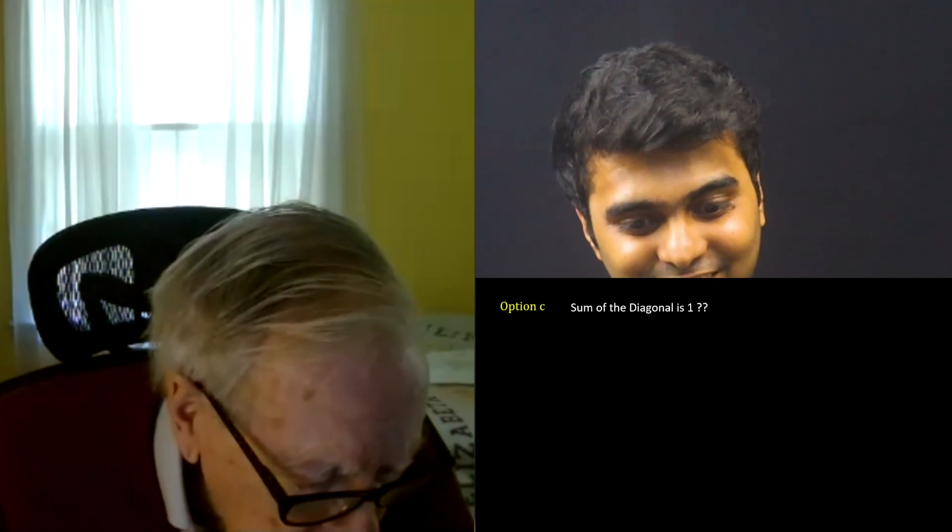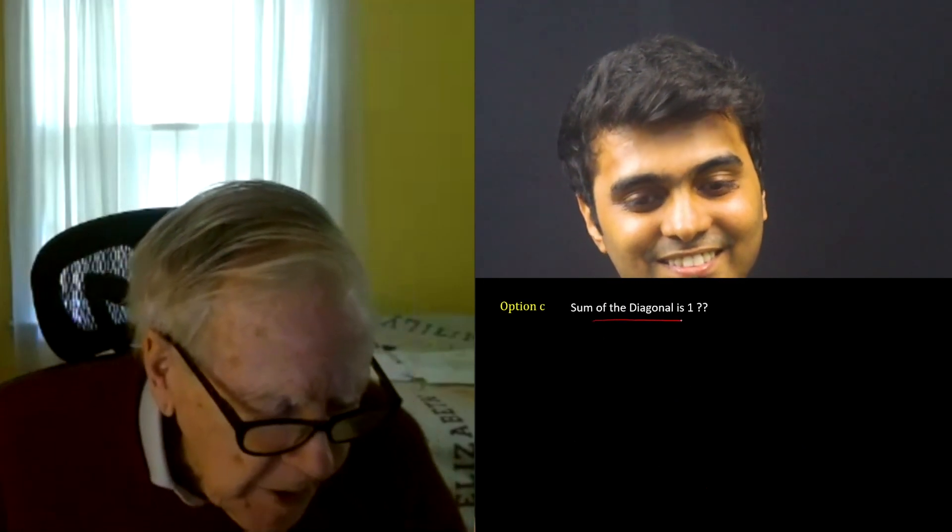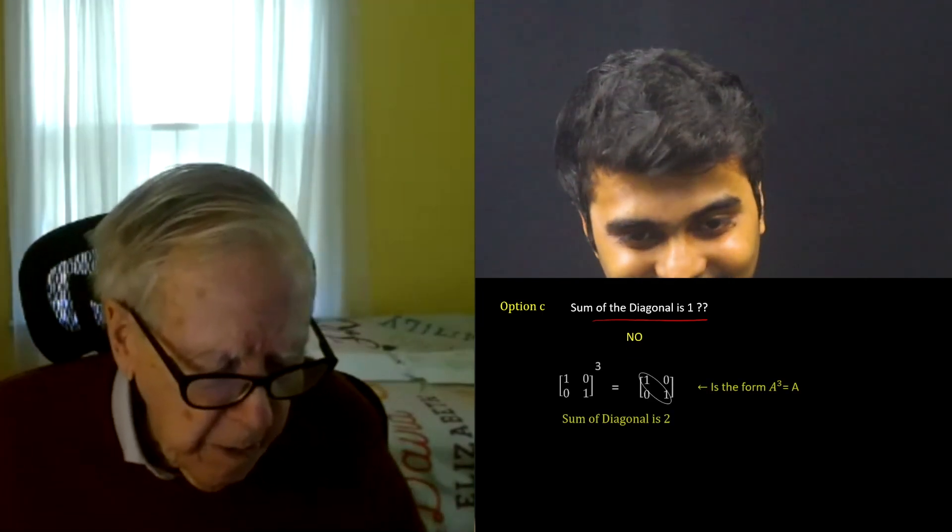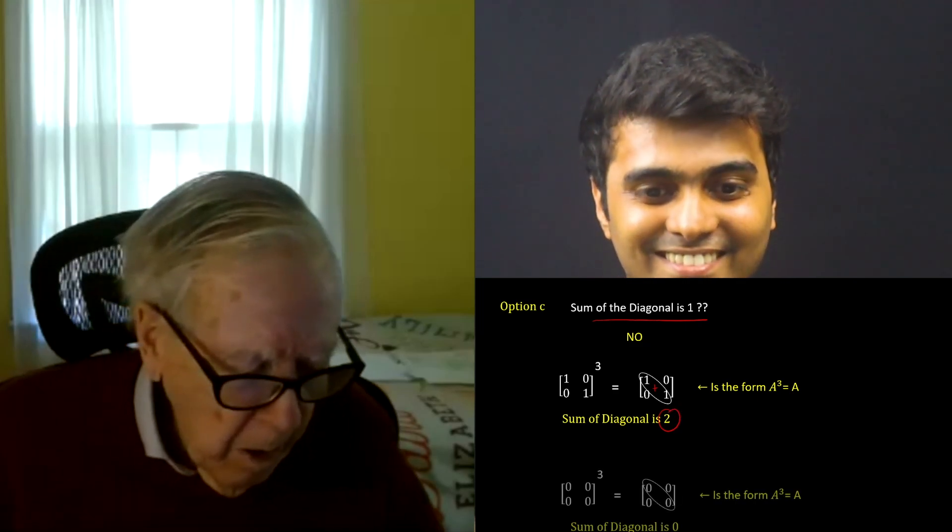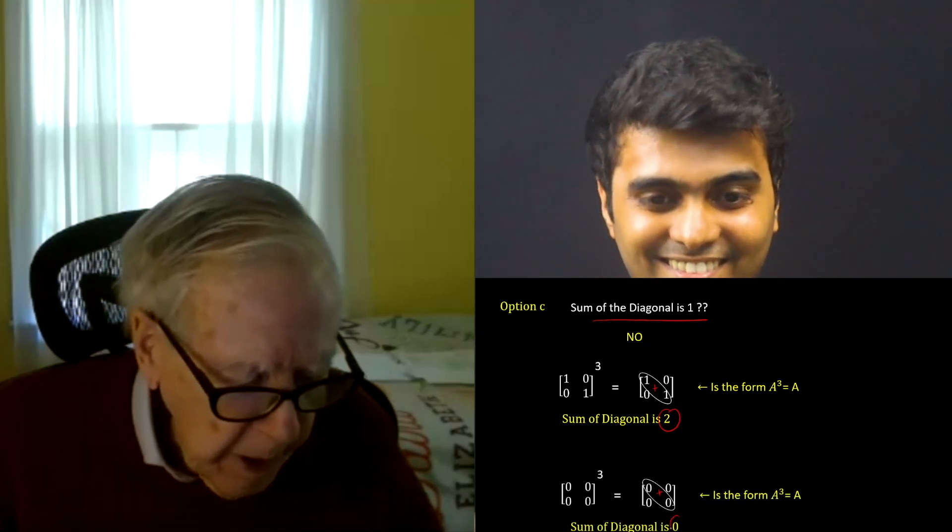So the sum of the diagonal elements of A is one? No, certainly not, because A could be the identity. Yes, yes. Or the sum is N, or A could be the zero matrix.